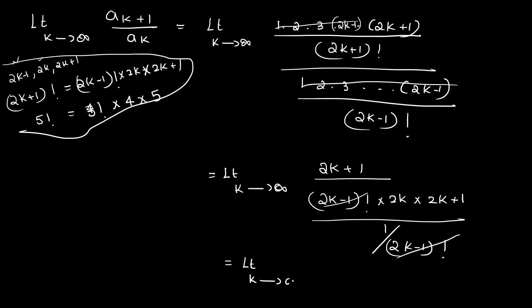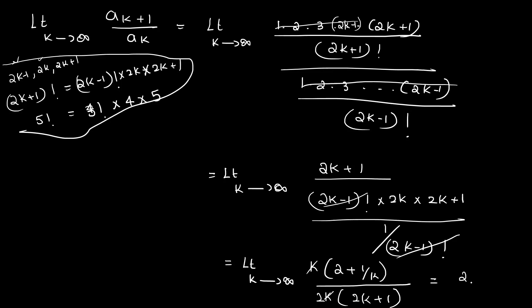After cancellation, we get the limit as k tends to infinity of 1 divided by 2k, which equals 2 divided by infinity, which is zero. Since zero is less than 1, the series converges by the ratio test.